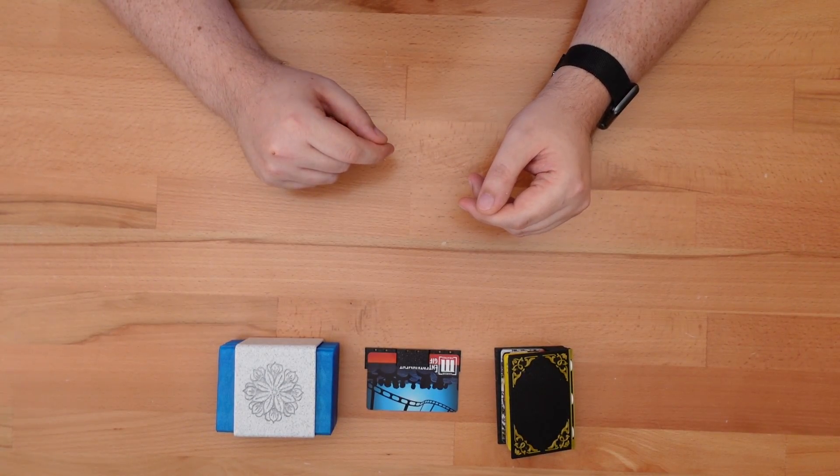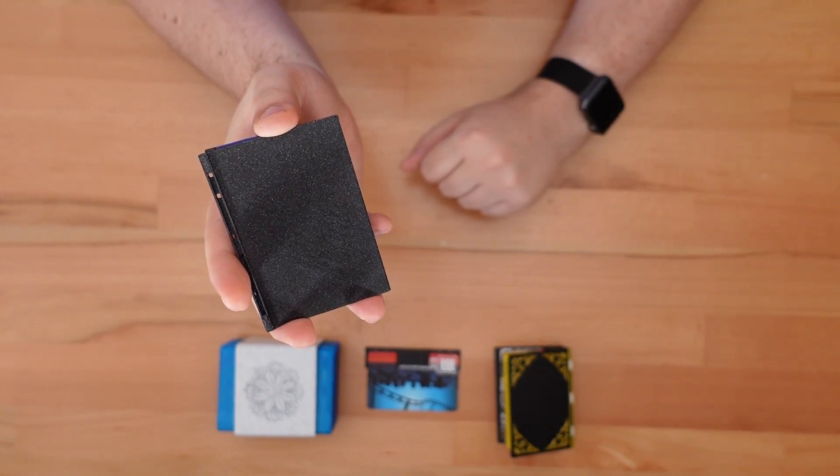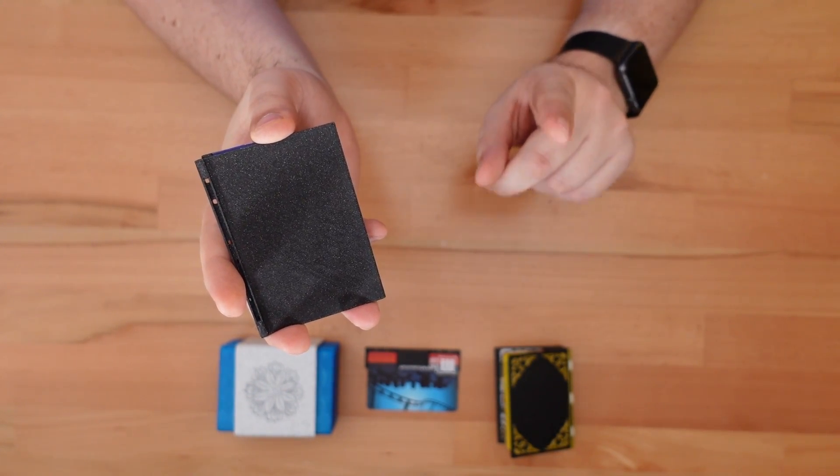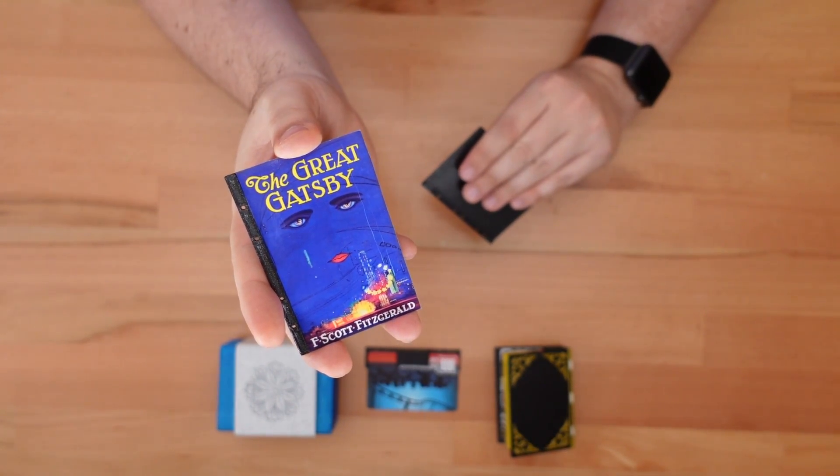This project comes with several cover options. This blank cover is perfect for remixing your own designs. Or you can use a 2D printer and print your favorite book cover and just glue that on.